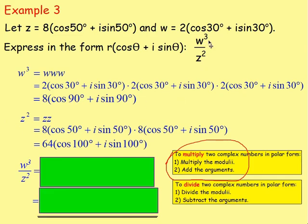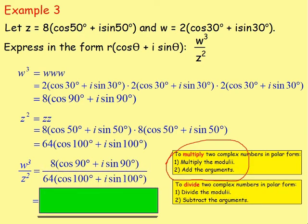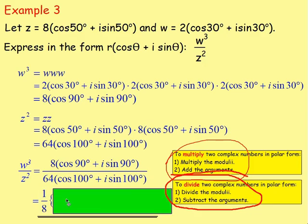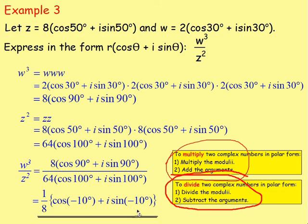The question asks us to divide W cubed by Z squared. W cubed is 8(cos 90 + I sine 90), and we divide that by Z squared, 64(cos 100 + I sine 100). To divide, we divide the moduli and subtract the arguments. 8 divided by 64 simplifies to one eighth. The argument is 90 take away 100, which gives negative 10. So the answer is one eighth bracket cos(−10°) plus I sine(−10°).